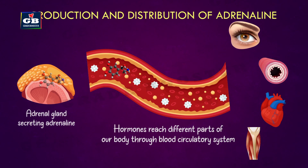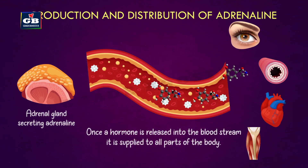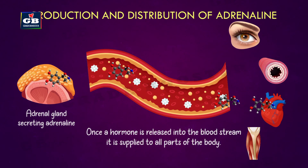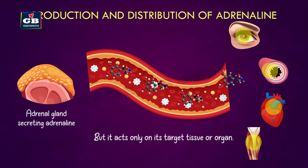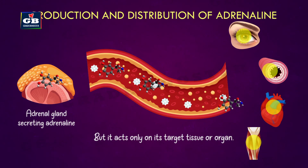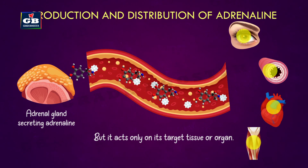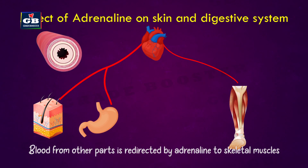Although adrenaline is supplied to all parts of the body, only a few organs accept it and function accordingly. Adrenaline mainly affects our eyes, blood vessels, heart, and muscles. Due to the action of adrenaline, the heart beats faster and supplies more oxygen to our muscles. Blood to the digestive system and skin is reduced due to contraction of muscles around small arteries in these organs.